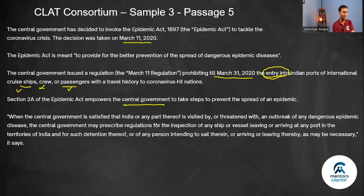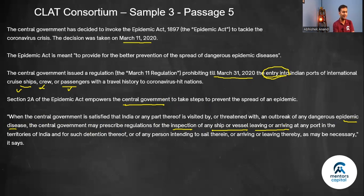When the central government is satisfied that India or any part thereof is visited by or threatened with an outbreak of a dangerous epidemic disease — this apprehension must be present — the central government may prescribe regulations for the inspection of any ship or vessel leaving or arriving at any port in the territories of India, and for such detention thereof or of any person intending to sail therein as may be necessary.